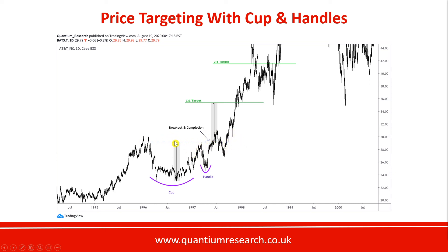That height is shown by this blue dotted horizontal line, and that distance is then projected at the point of breakout to get the one-to-one target. You then add another one unit of that height on top to get your two-to-one target. We can see that both targets are met easily here — there's a little resistance before the rally continues in AT&T shares, and the two-to-one target is quite a significant area of resistance too.